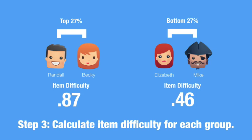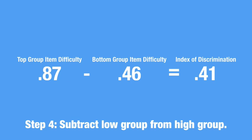In this example, all of the students in my high group yielded an item difficulty of 0.87, while the low group yielded an item difficulty of 0.46. Finally, you subtract the calculated difficulty of the bottom group from the top group. Voilà — you have your index of discrimination. Also note that you get two more item difficulty numbers: how hard the question was for your best performers and how hard it was for your bottom performers.